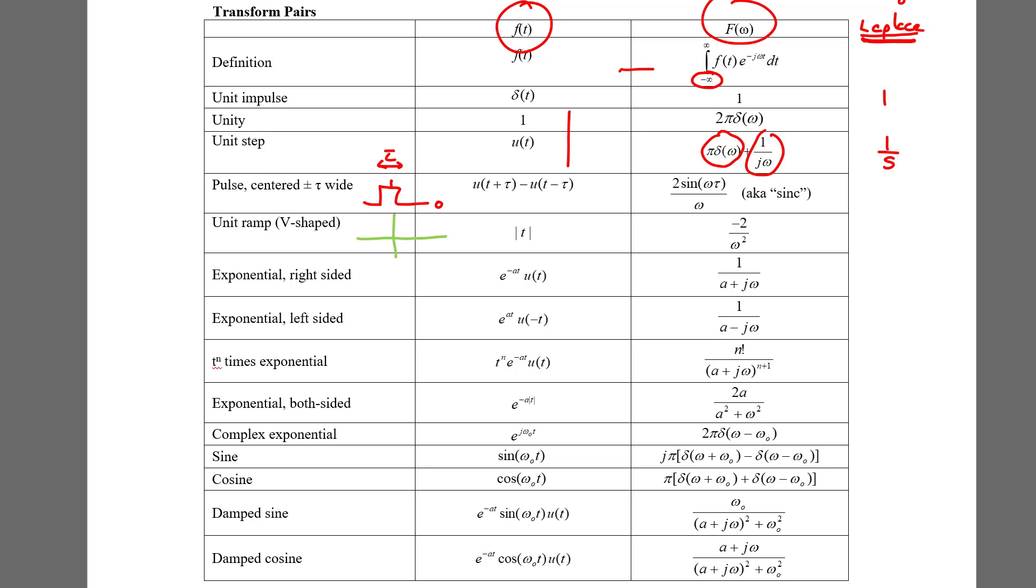Here's our axes, and the unit ramp looks like that. Magnitude of t, so for t greater than zero it's the same thing as t. For t less than zero it's the same thing as negative t.